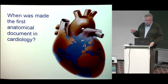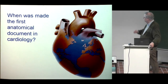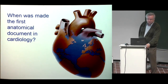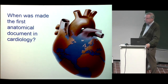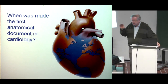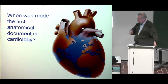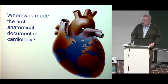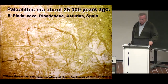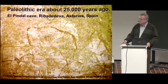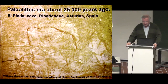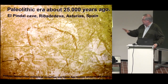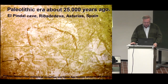I ask you: when was made the first anatomical document in cardiology? The answer is not Leonardo da Vinci — he was a talented man and made work on the anatomy of the heart, but the first one was about 25,000 years ago in El Pindal Cave, Riba de Deva Asturias in Spain, in a cave painting. The ancient man painted a mammoth on the wall, and the only anatomical structure in this painting was the heart — perhaps because they recognized that is the part where spears must be oriented when killing a mammoth.